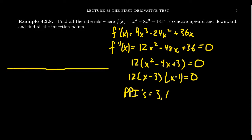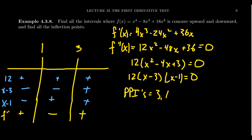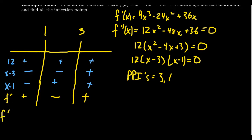We're going to build a sign chart, just like we did with the first derivative test to determine monotonicity and extrema — it's basically the same idea, just using the second derivative now. We're concerned with PPI x = 1 and PPI x = 3. Looking at the factors of the second derivative: the factor 12 is always positive. The factor (x - 3) is negative until x = 3, then positive. The factor (x - 1) is negative until x = 1, then positive. Combining these: for x < 1, positive × negative × negative = positive; for 1 < x < 3, positive × negative × positive = negative; for x > 3, all positive = positive.